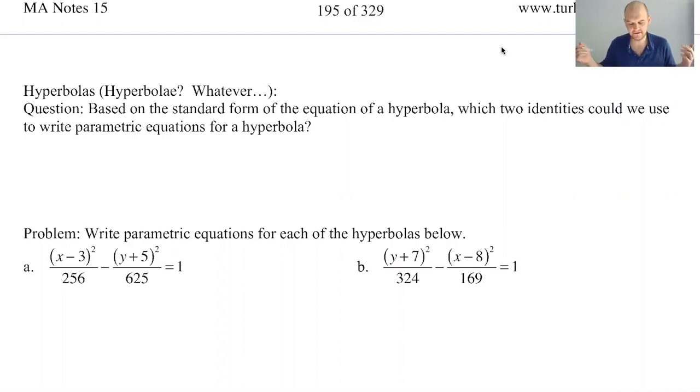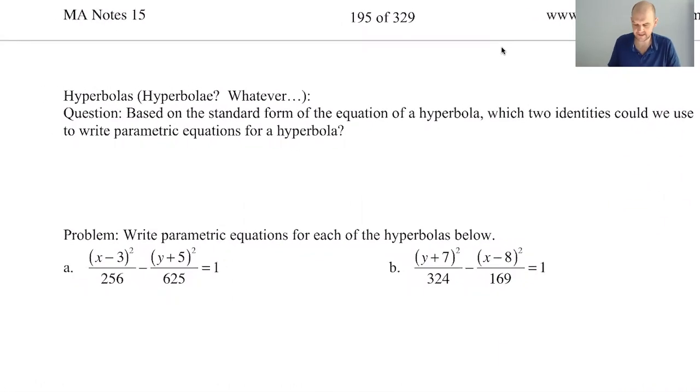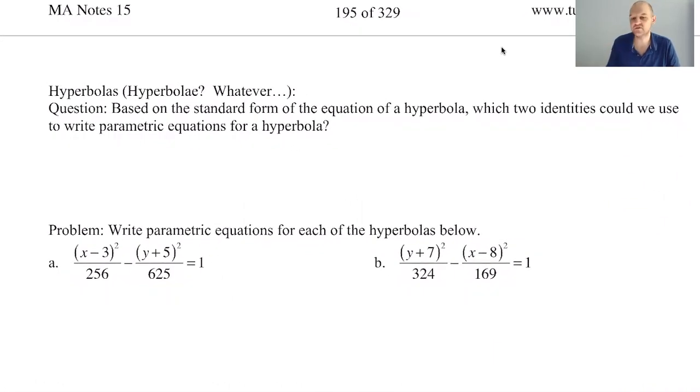It's parametric equations. We basically know a lot about them already because we delved into them at some point. We know from circles and ellipses that we're always using sine squared plus cosine squared equals 1, depending on convenience. With that in mind, which two identities are we going to use for hyperbolas?